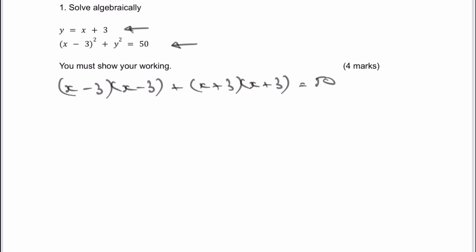And then really it's just a case of solving for this value of x. So therefore, if I look at the first two terms here, x times x is going to give me x squared, and then I've got minus 3x minus 3x is minus 6x, and then I've got minus 3 times minus 3 is going to be positive 9.